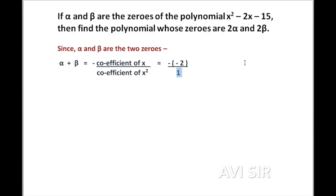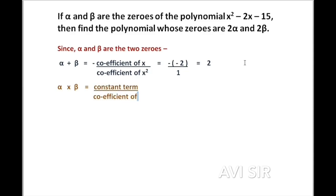The coefficient of x is minus 2 and the coefficient of x squared is 1, so alpha plus beta equals 2. For alpha into beta, it equals the constant term by the coefficient of x squared, which is c by a. The constant term is minus 15 and the coefficient of x squared is 1, so alpha into beta equals minus 15.